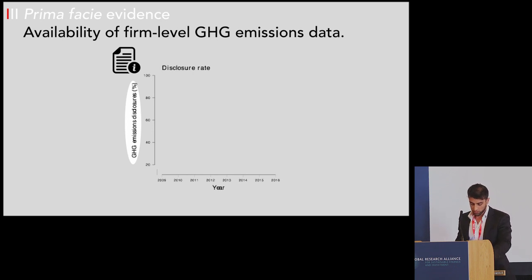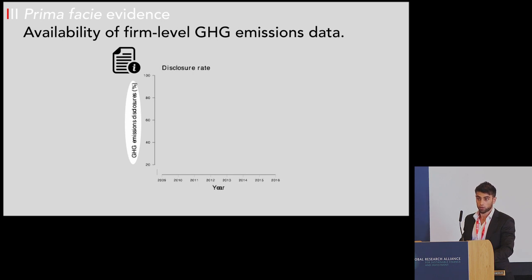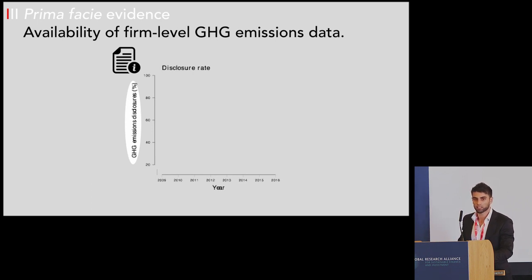Let's start with some prima facie evidence and look at the disclosure rate — that is, whether we have information on total greenhouse gas emissions for a firm in a given year. For this exercise, we compare UK firms to European firms. UK firms are firms impacted by the regulation, while European firms are firms listed on major European stock markets across roughly 11 countries.